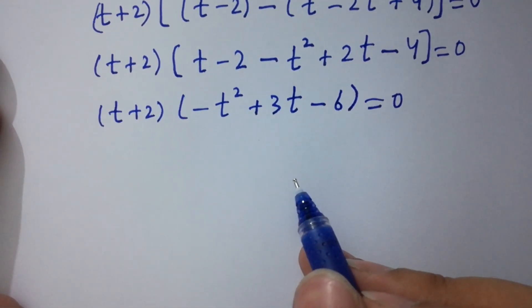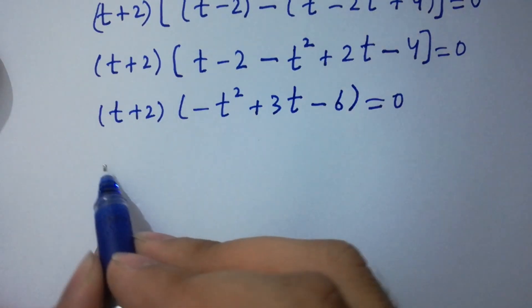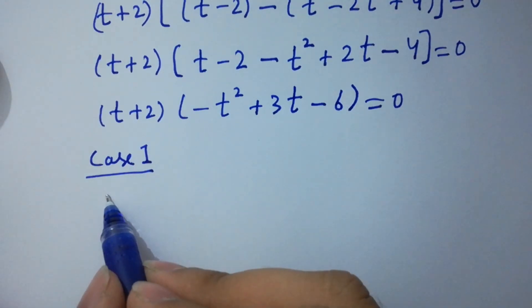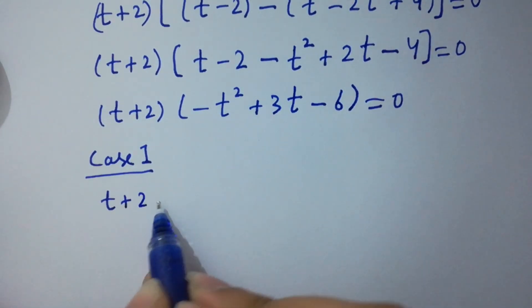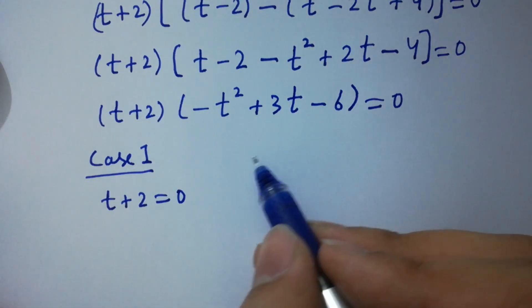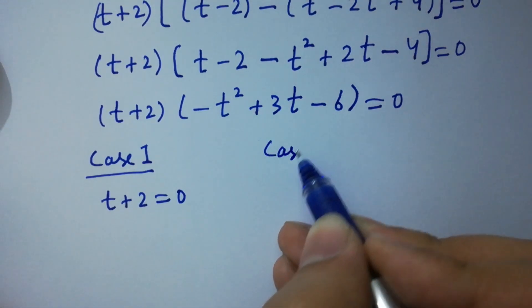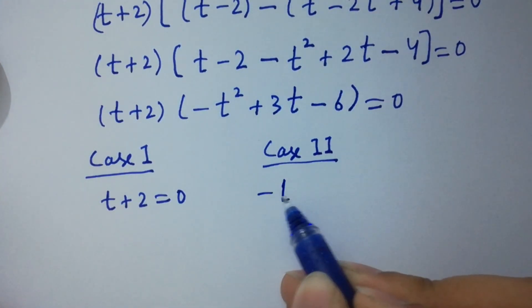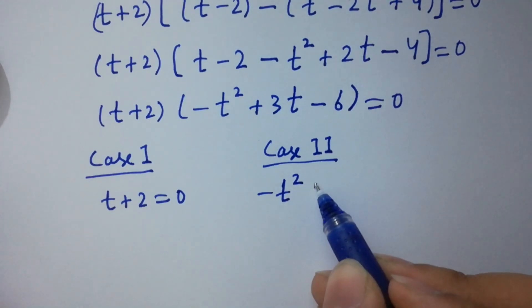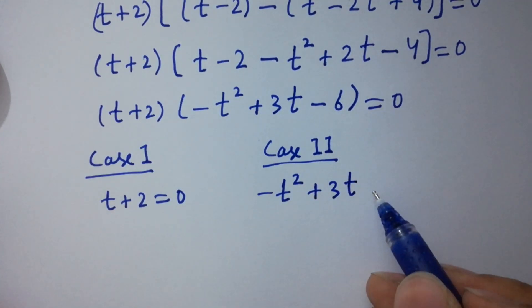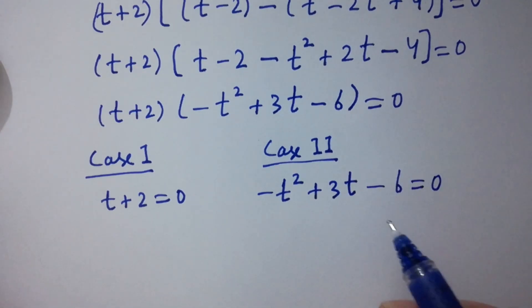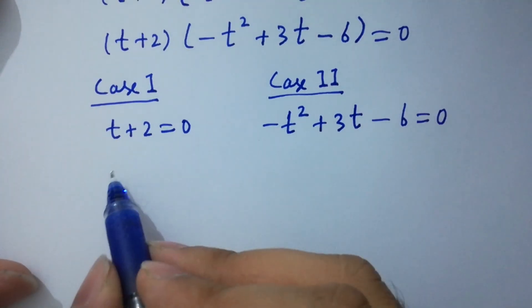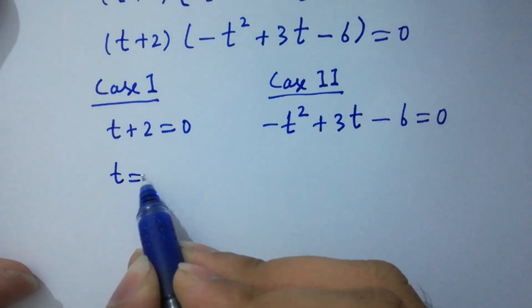So we have two cases here. Case 1: t plus 2 equals 0. And the second case is: minus t squared plus 3t minus 6 equals 0.